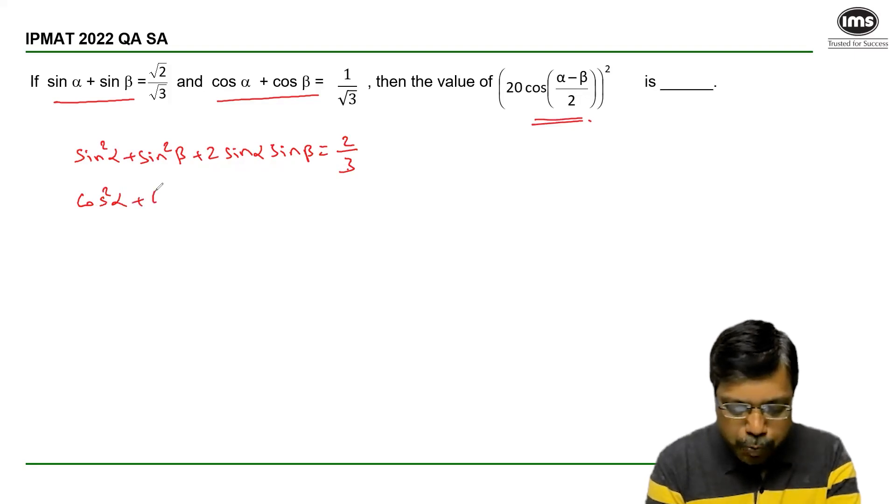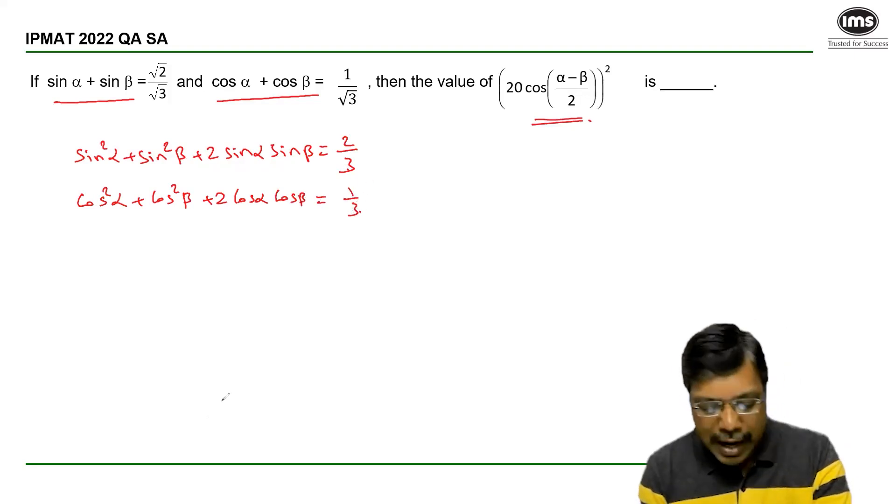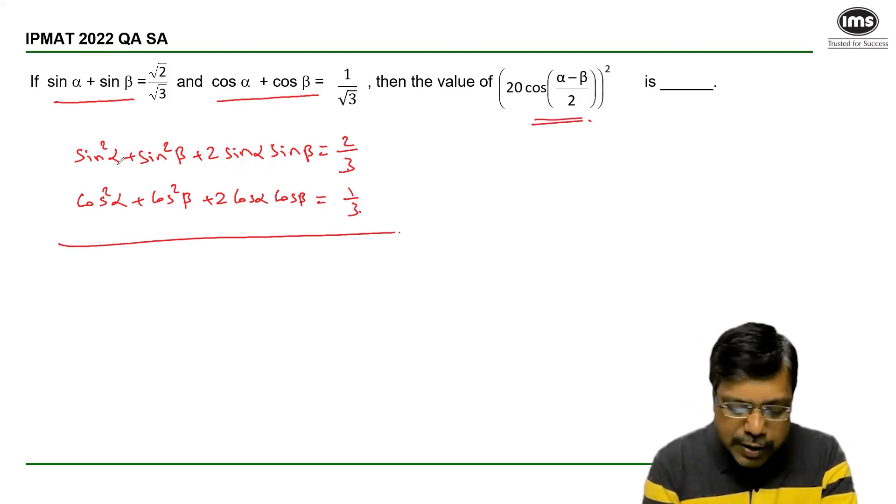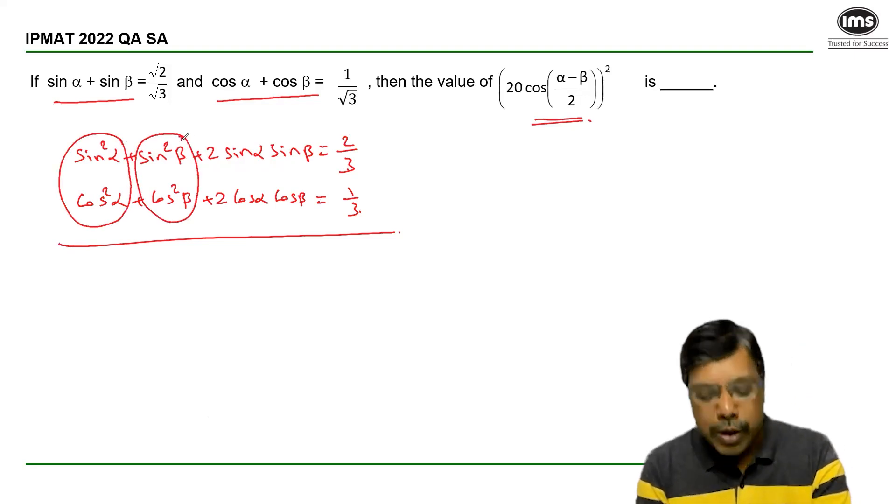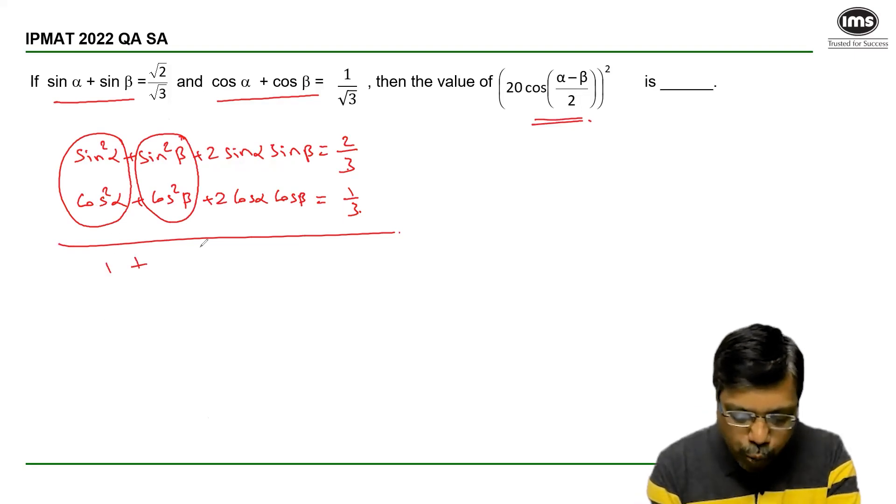Adding both the equations now, sin square alpha plus cos square alpha is 1, sin square beta plus cos square beta is 1. So 1 plus 1 plus 2 into...